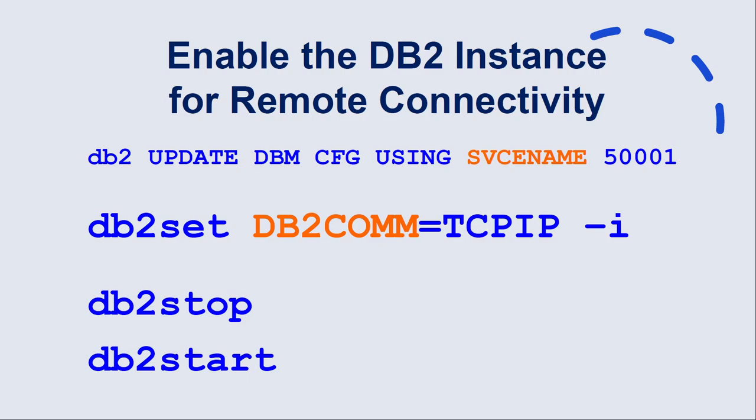These are the steps at the database server level — the only steps you need to do at the server. You need to change two parameters: service name and DB2COMM. Service name is the port value; I'm using 5001 here. Use a port that is not already in use on that server, as per your organization's standards. Then tell DB2 to use TCP/IP as the communication protocol by setting DB2COMM equal to TCPIP. Once you have set these values, stop and start the instance. Once this is done, you are OK to log off from the main database server.